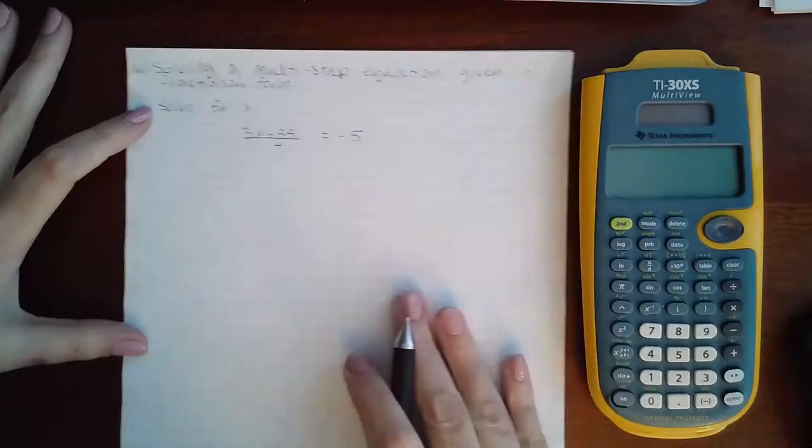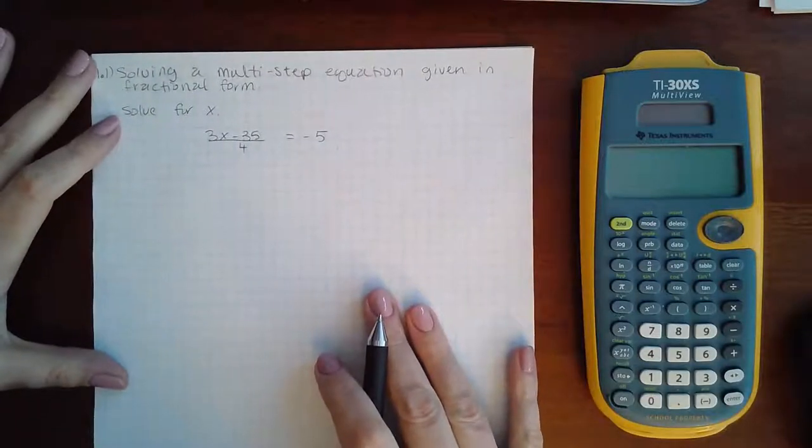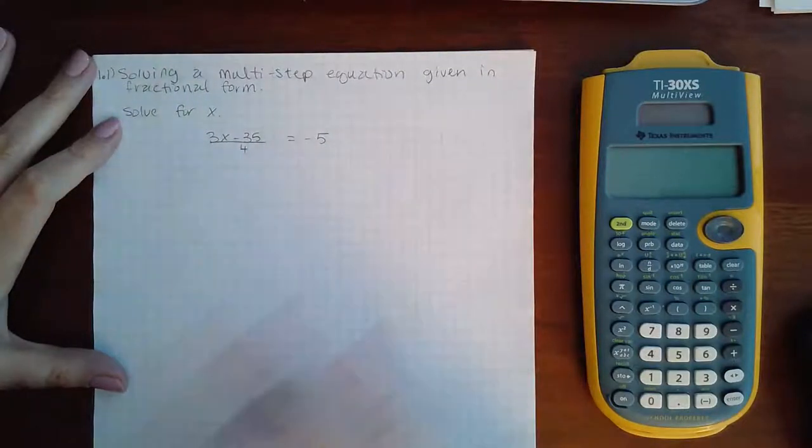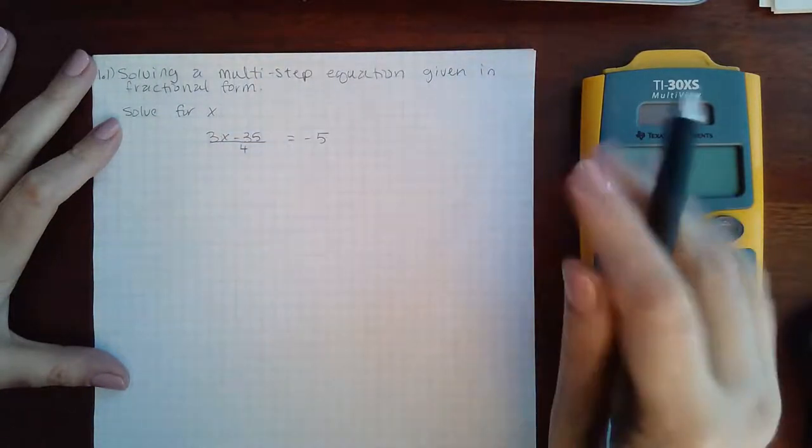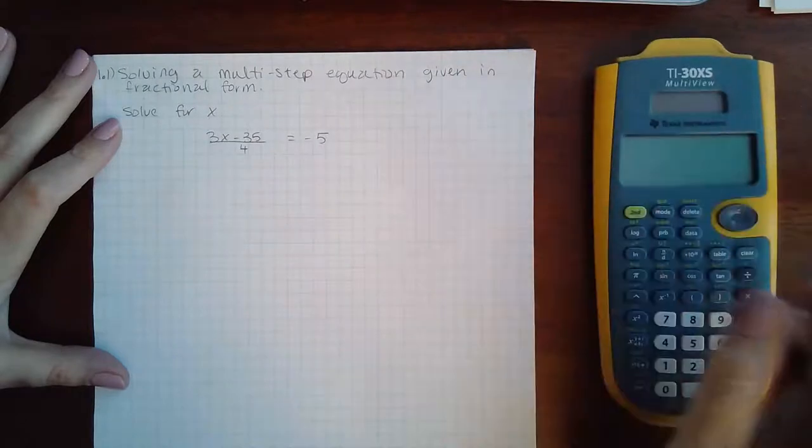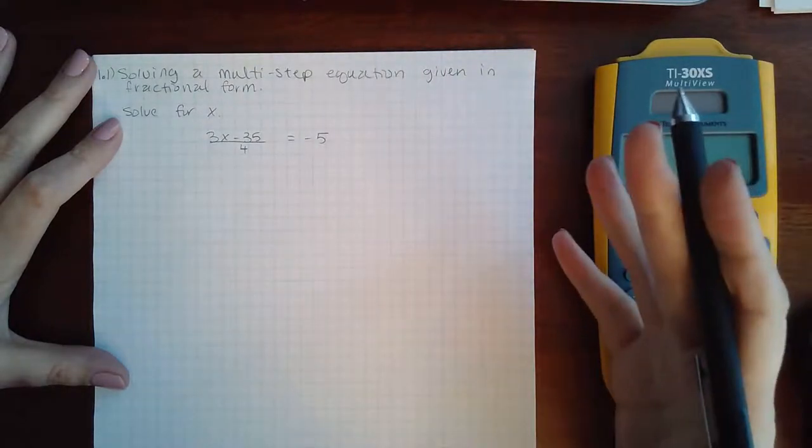So we do need to cover the steps on how to solve any linear equation. A linear equation means when there's no exponents on the x's and there's no square roots on the x or anything like that.